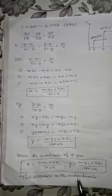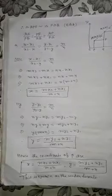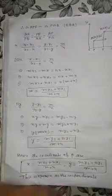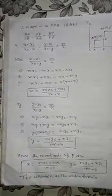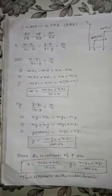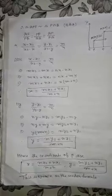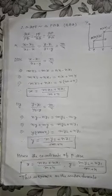This is known as the Section Formula. The coordinate of P using this formula is: x equals (Mx2 plus Nx1)/(M plus N) and y equals (My2 plus Ny1)/(M plus N).